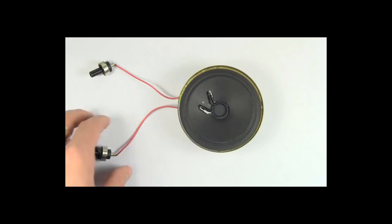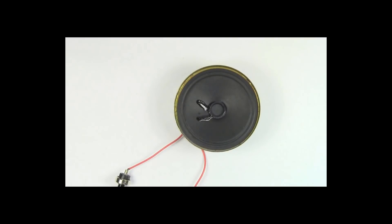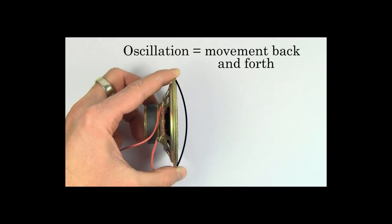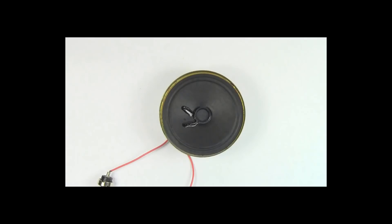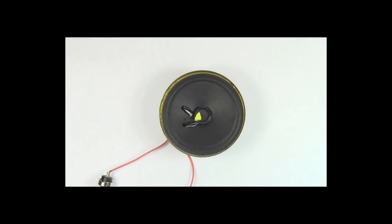Check out this speaker. If we plug it in, it makes sound. The way this speaker creates sound is by moving the front of the speaker, which is called the diaphragm, back and forth rapidly. This speaker is oscillating too fast for the human eye to see, but if I put a piece of paper on the speaker, we see that because the diaphragm is oscillating, it's bumping into this piece of paper and causing it to dance.